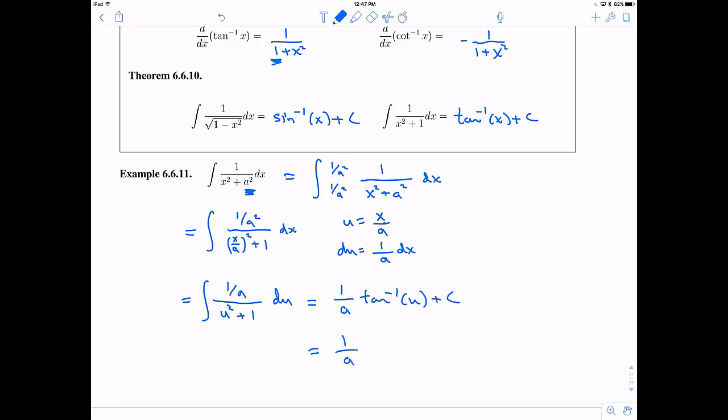Still have my constant 1 over a along for the ride. And so finally, I get 1 over a times tangent inverse of x over a plus my constant. So this is a great formula to memorize to know, it does come up a decent amount.